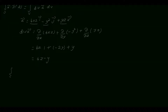So the surface integral of A vector dot N vector into dS is equal to the volume integral of divergence of A vector, which is 4z minus y, into dx dy dz. The limits of x are 0 to 1, limits of y are 0 to 1, and limits of z are 0 to 1. First, integrate 4z minus y with respect to dx.